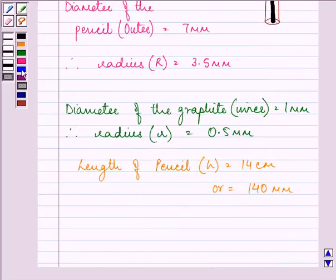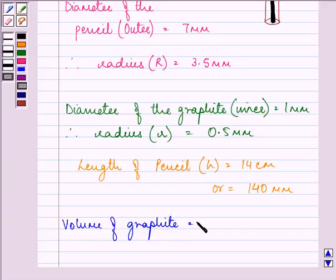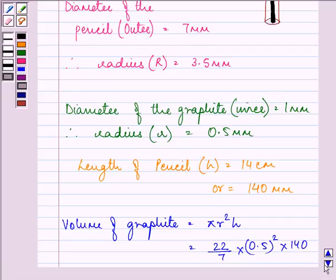Now let us find the volume of the graphite. That will be equal to πr²h. The value of π is 22/7, r is 0.5, so it will be 0.5 squared, and h is 140 mm.